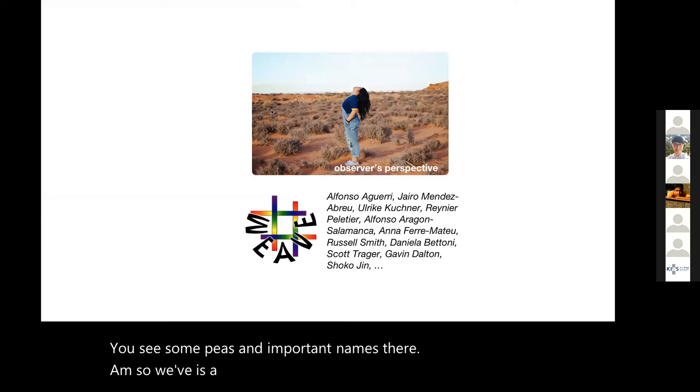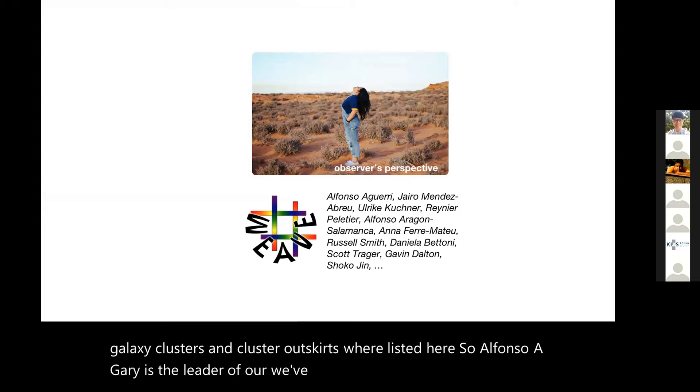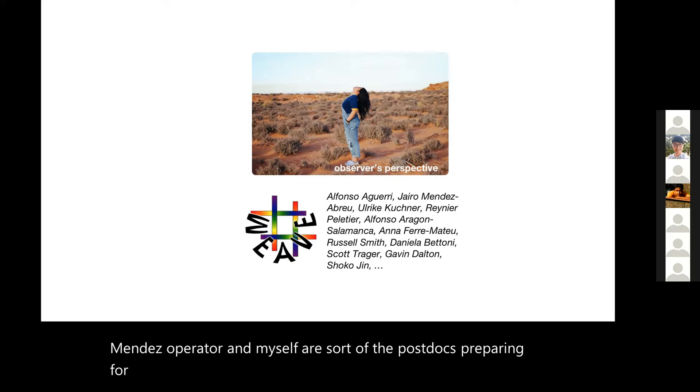This is all part of the WEAVE and the 300 collaborations and you see some PIs and important names there. So WEAVE is a collaboration formed by a team of observers. We are preparing for the WEAVE instrument at the William Herschel telescope. Some key figures, you have the names printed there, all contribute to this work related to galaxy clusters and cluster outskirts.